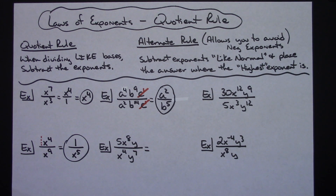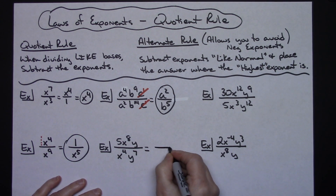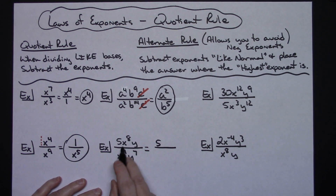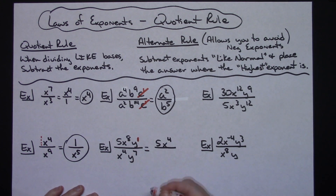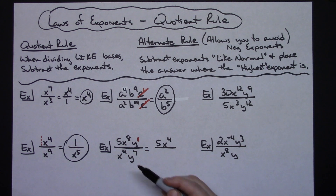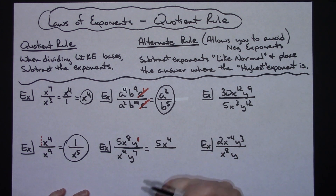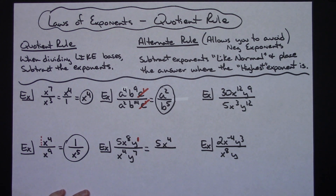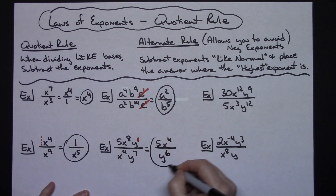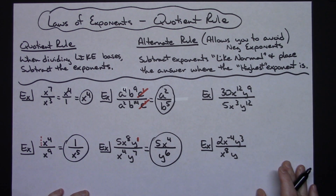This example has a coefficient — the five just stays as is. For the x's: eight minus four gives x to the fourth in the numerator since x to the eighth is on top. For the y's, don't forget the imaginary one in front of that y. Seven minus one gives six, and since y to the seventh is larger and it's in the bottom, y to the sixth goes in the denominator. So the answer is 5x to the fourth over y to the sixth.